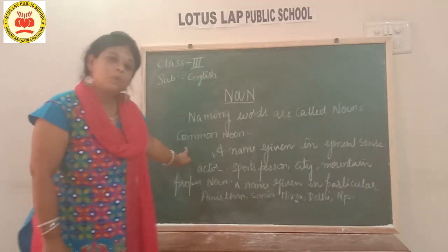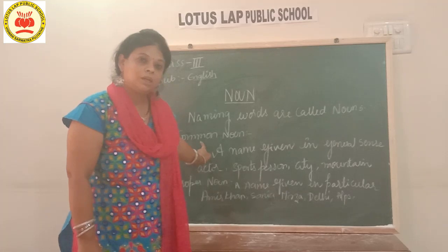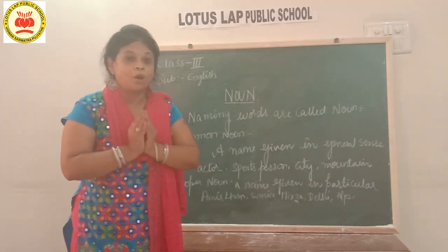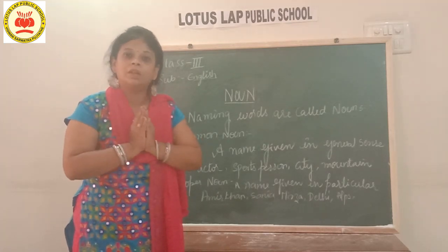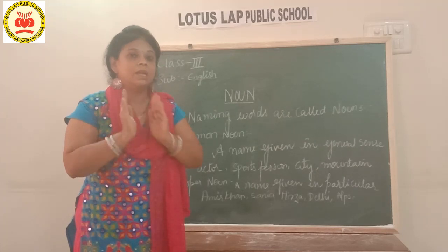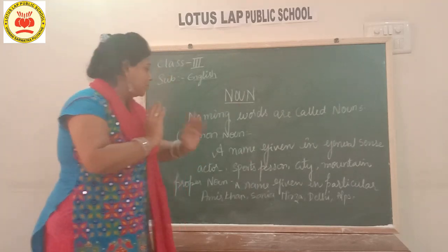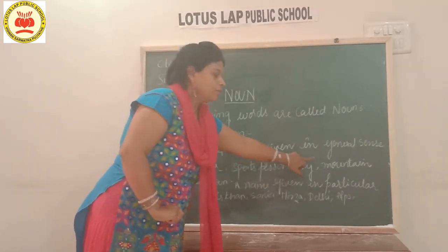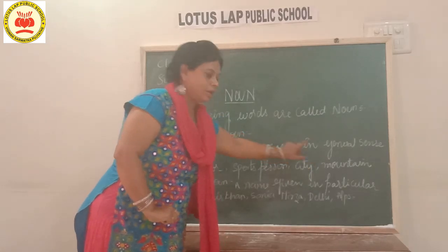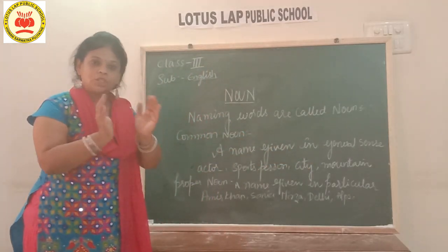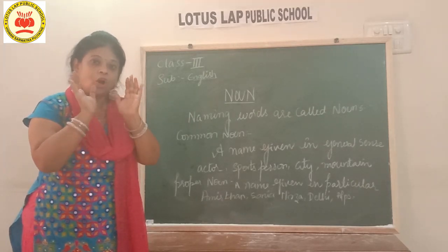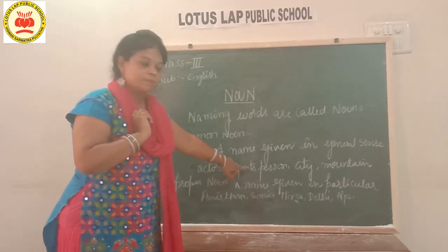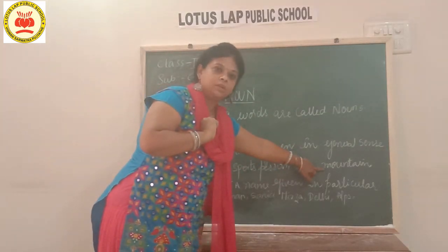What is a common noun? The word says common — it is a name given in common to a particular group or class. Name given in common. For example, see what I wrote: actor, sports person, city, mountain. Actor — a common name given to a class of actors is called a common noun. Sports person, city, mountain — these are common nouns. Now if you see the proper noun, you can better understand common noun also.